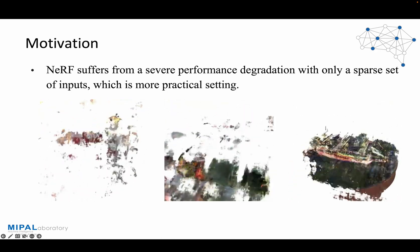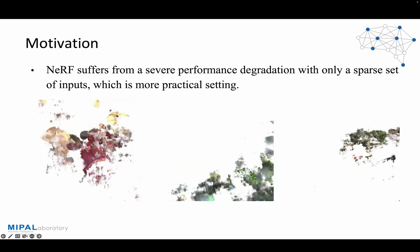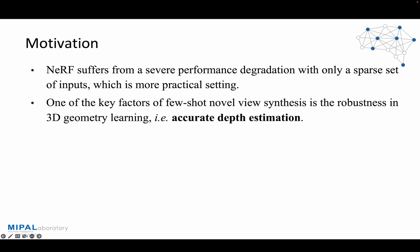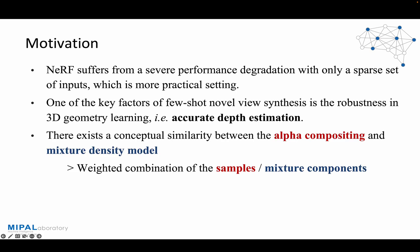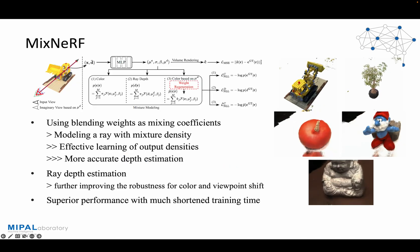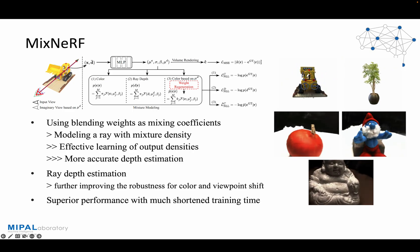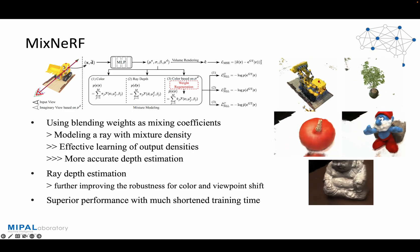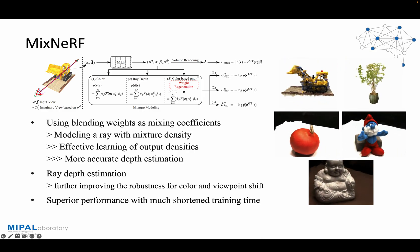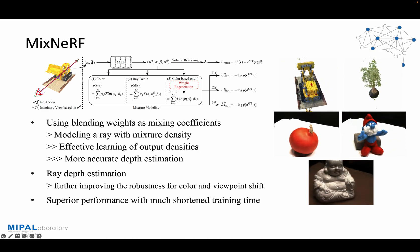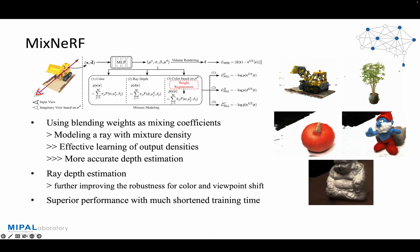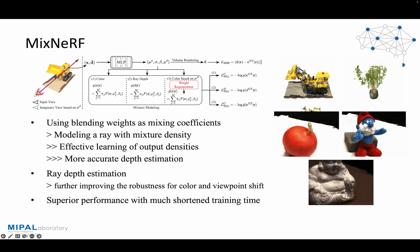When NeRF is trained with only a sparse set of inputs, it tends to exhibit notable degradation in performance. A key point of novel view synthesis is the ability to accurately estimate depth, which is essentially understanding the 3D geometry of the scene. We have paid attention to the fact that the alpha compositing technique and the mixture density model share a conceptual similarity in that they both involve the weighted combination of samples or mixture components. Therefore, we propose MixNeRF, which models a ray with a mixture model by using the blending weights as mixing coefficients. Through our framework, we enable more effective learning for the output densities, leading to more accurate depth estimation. Furthermore, with our proposed auxiliary task of ray depth estimation, we can further improve the robustness for novel view synthesis.